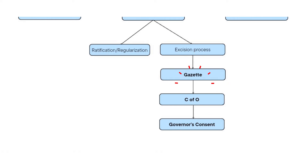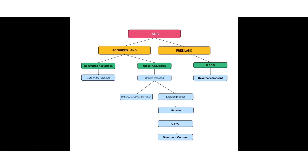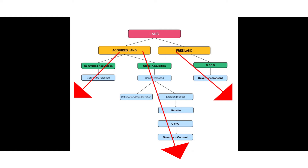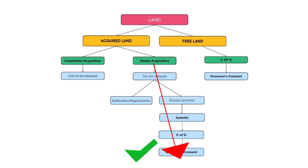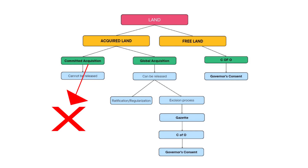Once the land is gazetted, it means the government has released that parcel of land to the individual to develop. The person can now go ahead to perfect their title to Certificate of Occupancy, and subsequent buyers will then need to perfect their titles to Governor's Consent. So there are three separate routes here. The key point is that it is always best to buy lands free of government acquisition — freehold — or lands under global acquisition that can be released. Lands under committed acquisition can never, ever be released.